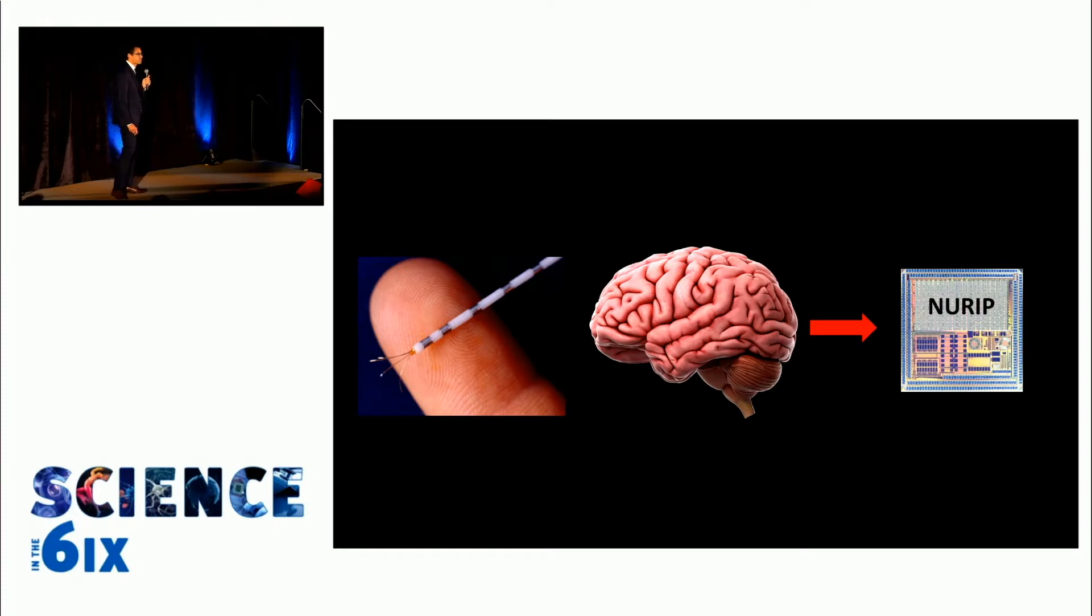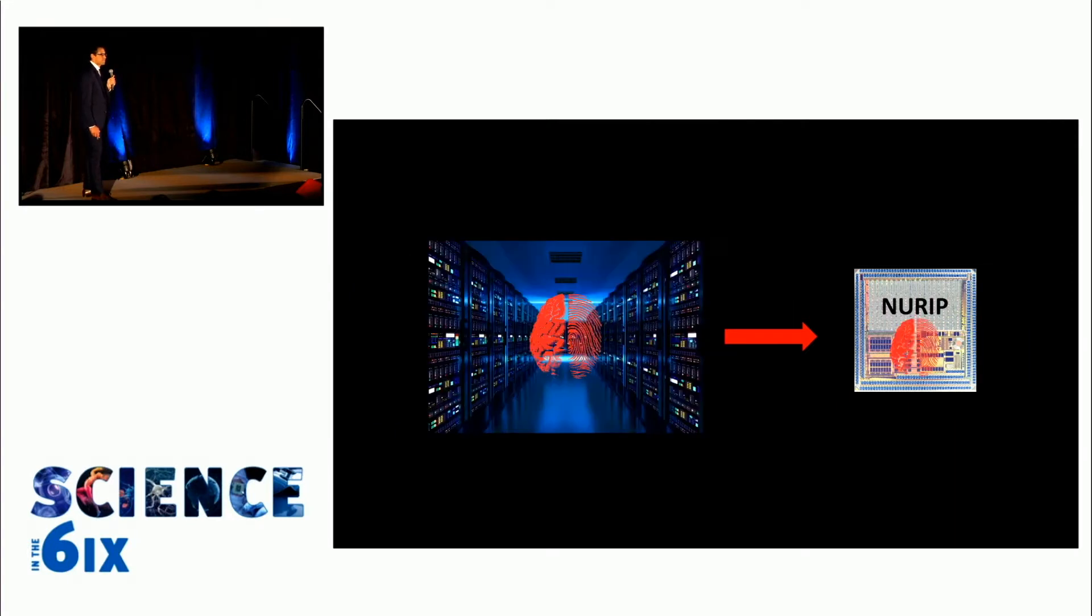Neurope samples brain activity 250 times per second and then analyzes brain activity over a million times per second to understand when the seizure is going to start. That's pretty amazing.